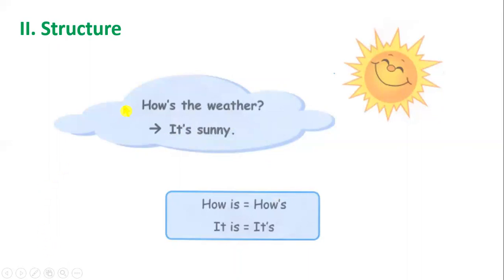Còn từ it's trong câu it's sunny là cách viết tắt của it is. How's the weather? It's sunny. Cách khác là: how is the weather? It is sunny. How's the weather? It's sunny. Hôm nay thời tiết thế nào? Hôm nay đây là thời tiết có nắng.